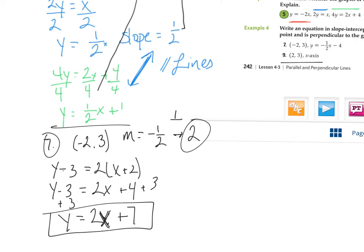Last one, right there, number nine. So again, writing in slope intercept, and I want to go through the point two, three, and be perpendicular to the x axis. So let's just think about what that would look like. So I'm going to go through the point two, three. Maybe that's this point right here. And then I'm going to be perpendicular to the x axis. So I want to form a 90 degree angle with the x axis. So that means my line is going to look just like that.